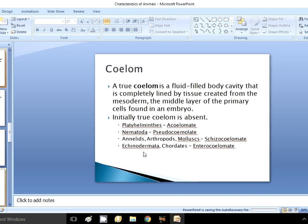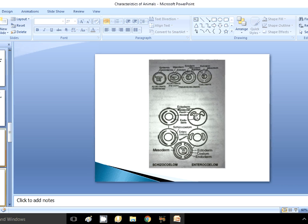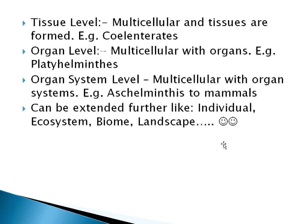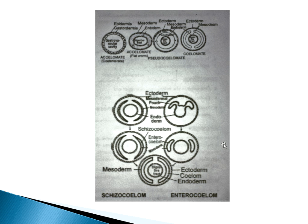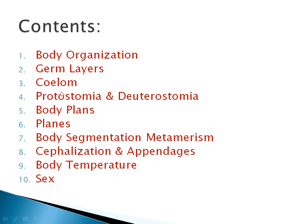From echinoderms onwards, the coelom is formed differently — through mesodermal pouches, forming the enterocoelom. This is a true coelom possessed by the most developed organisms, including us. So in this video we discussed germ layers and the coelom. In the next video we will discuss protostomia and deuterostomia. Thanks for watching!